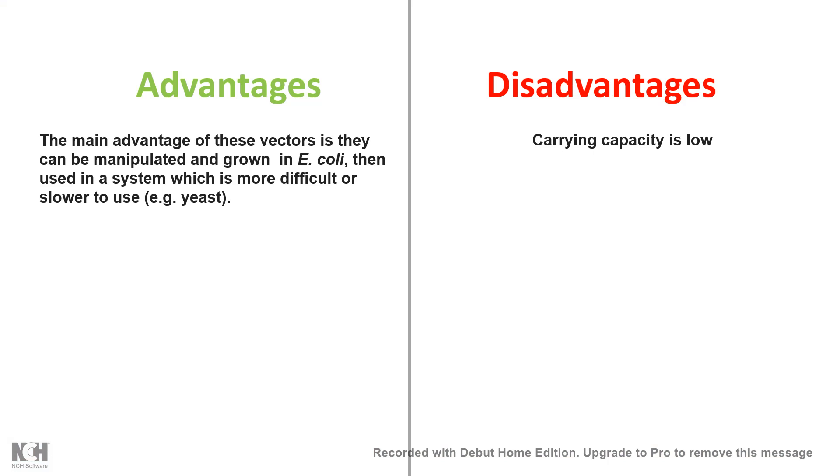So in short we'll talk about the advantages. The main advantage is it can be easily grown and manipulated inside a bacteria. So it's easy to grow plasmids inside bacteria which is comparatively faster and easier than in eukaryotic species like yeast.